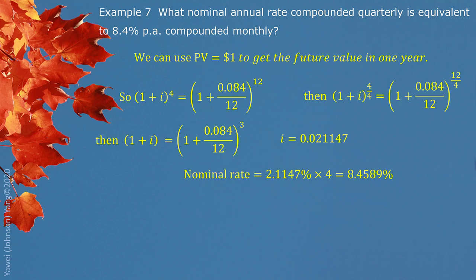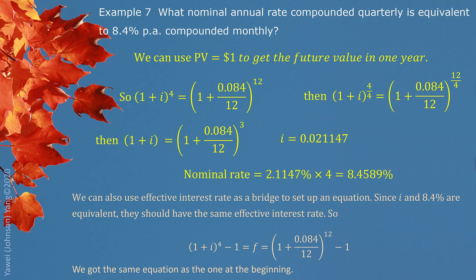We can also take a different approach. Since these two interest rates are equivalent, we can find the effective interest rate separately for both of them. If they are equivalent, they should have the same effective interest rate. The effective interest rate F acts as a bridge connecting them together. We can set up this equation, and you can see it is exactly the same as the equation we derived using $1 present value.